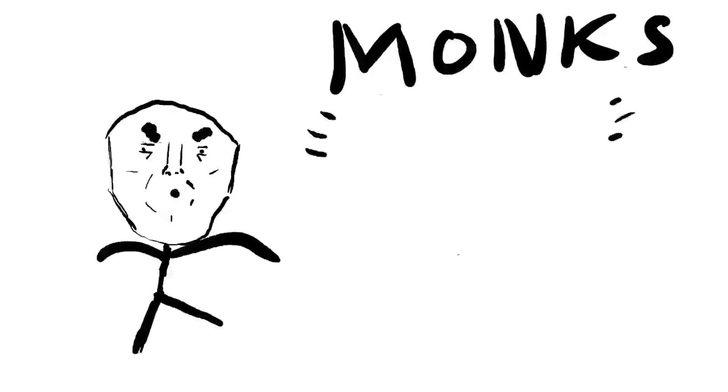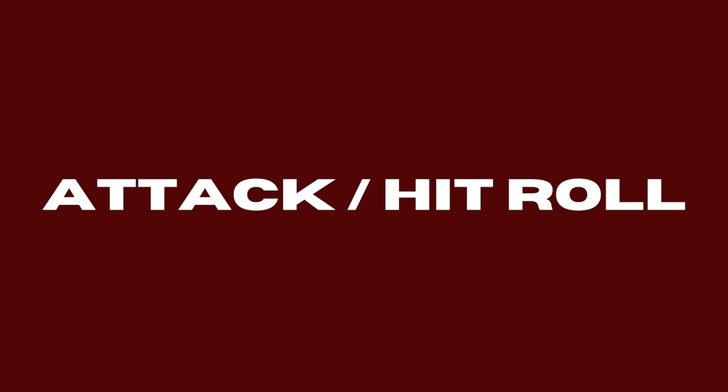Armor Class — AC. How hard someone is to hit. Their armor class is a number set based on how armored they are, or how quick they are at moving out of harm's way. Sometimes it's better to be lightly armored and able to dodge things — monks, for example.